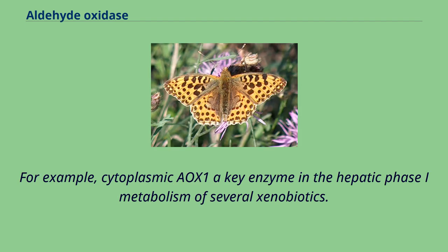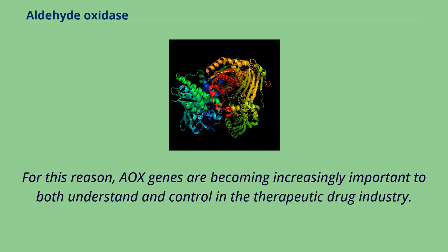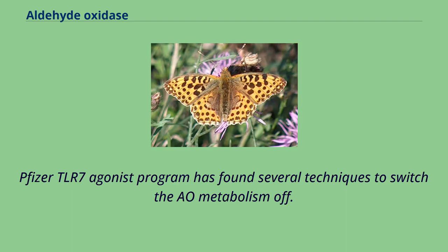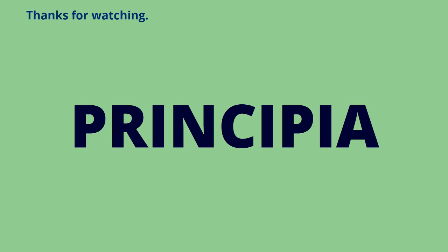For example, cytoplasmic OX1 is a key enzyme in the hepatic phase-1 metabolism of several xenobiotics. For this reason, OX genes are becoming increasingly important to both understand and control in the therapeutic drug industry. The Pfizer TLR7 agonist program has found several techniques to switch the aldehyde oxidase metabolism off.